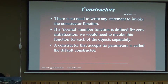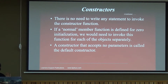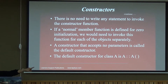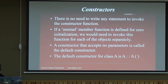A default constructor is a constructor with no parameters. We can have multiple constructors in a class — you know the concept of function overloading, giving the same name to different functions with different parameters. Similarly, we can create different constructors with the same name as the class but with different parameters. So any constructor having no parameter is known as a default constructor. For example, if there is a class A and a constructor has been defined that accepts no parameter, that is a default constructor.